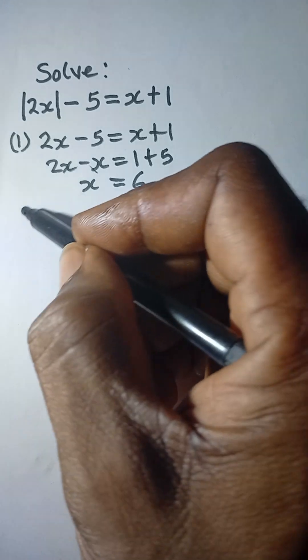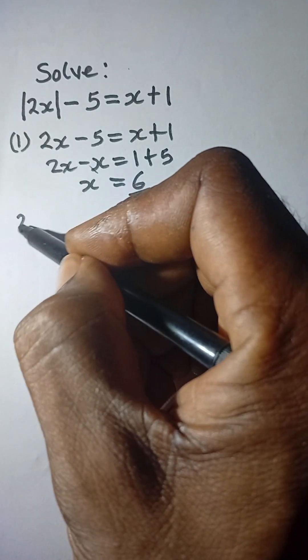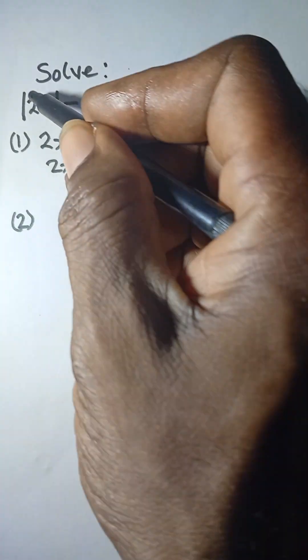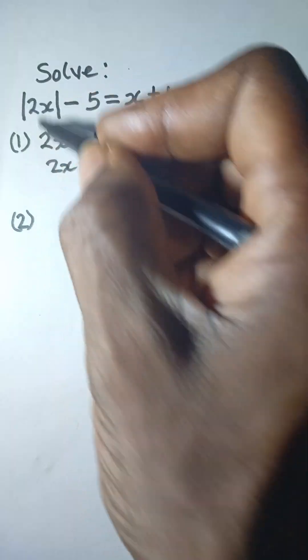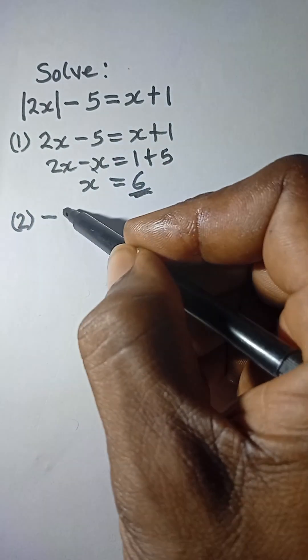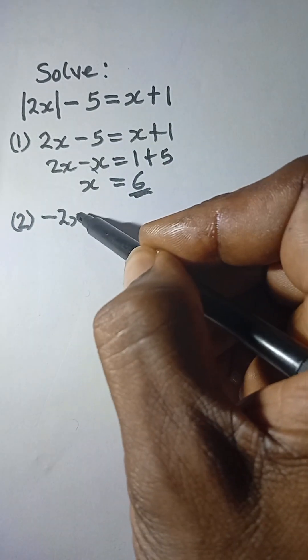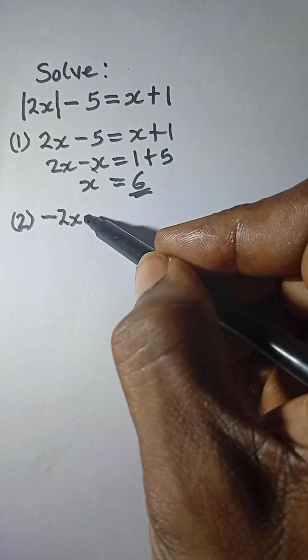The second solution, which is as a result of this bar here, we can take this as a negative value. So it becomes negative 2x, then minus 5